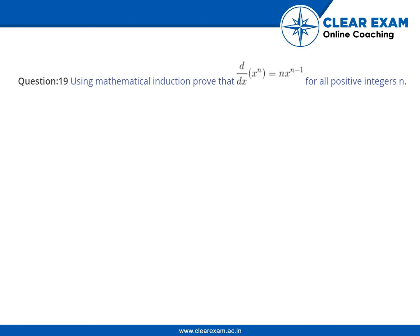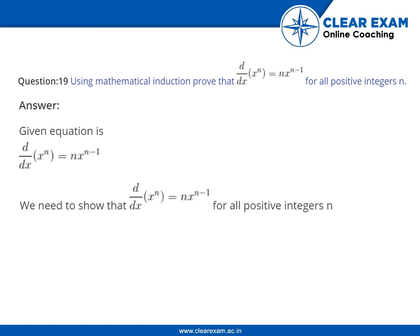Hello guys, let's understand question 19th. Using mathematical induction, prove that d by dx of x to the power n is equal to n into x to the power n minus 1 for all positive integers n. The answer to this question is: given equation is d by dx of x to the power n is equal to n x to the power n minus 1. We need to show that d by dx of x to the power n is equal to n x to the power n minus 1 for all positive integers n.